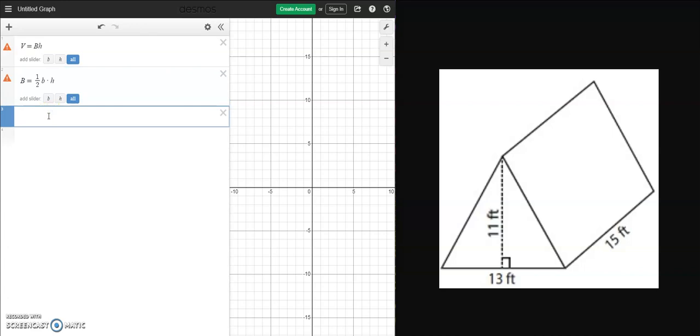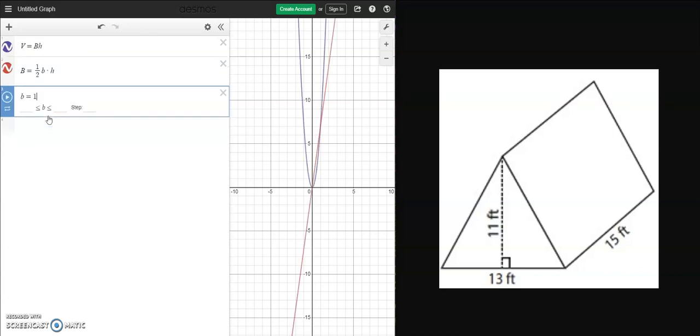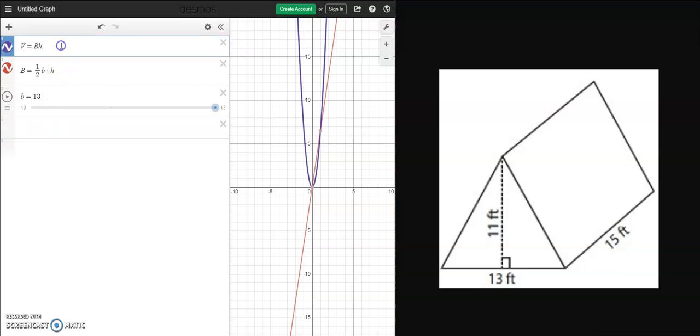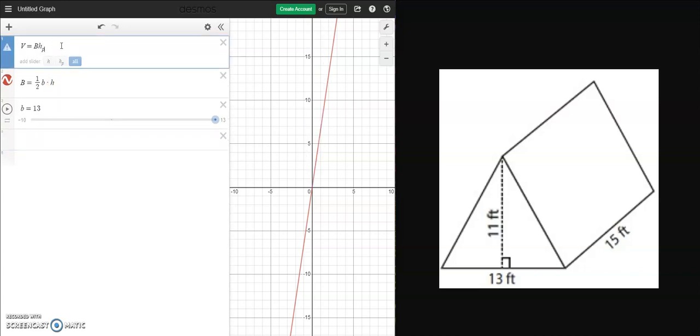So if I come in here, I can say my base is 13 that I can see there. But what's my height? I have two numbers. So this is a great conversation to have with students. There's actually two different heights. I have the height of the prism and then I have the height of the base. And so they can come in here and label what do those heights look like.